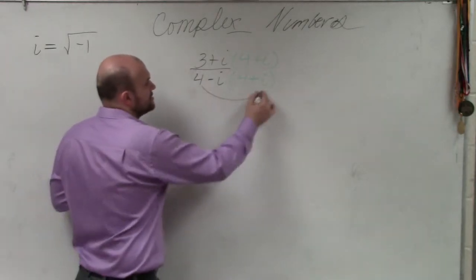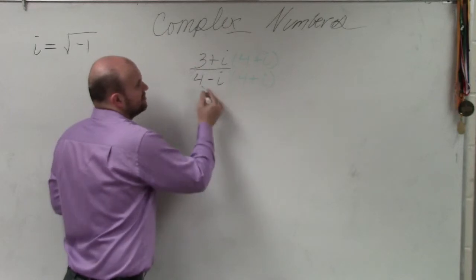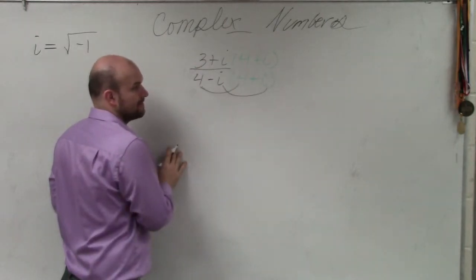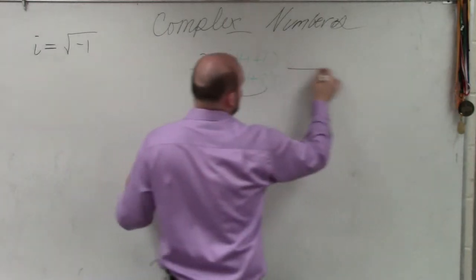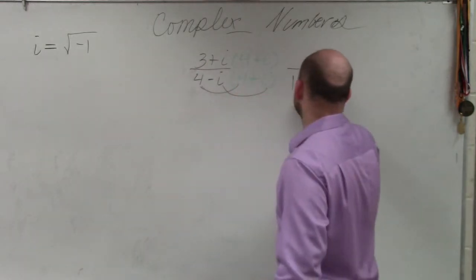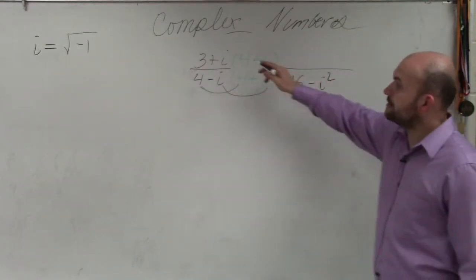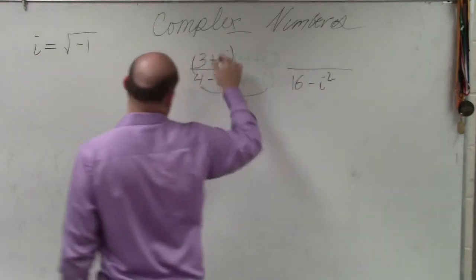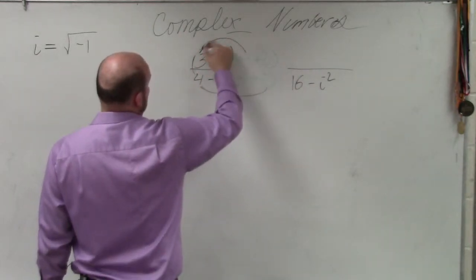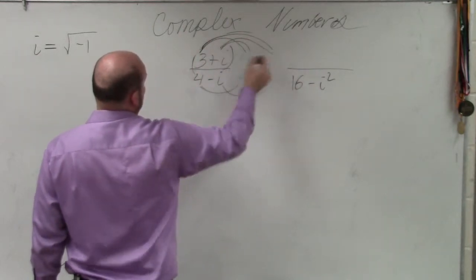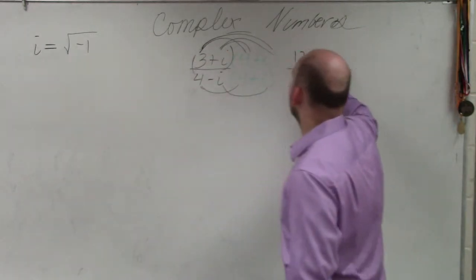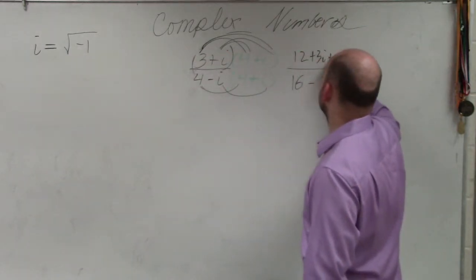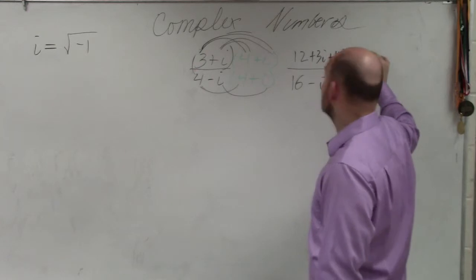So basically, all I need to do is multiply my first terms and my last terms. So therefore, my denominator over here is going to be 16 minus i squared. And then over here, though, I do have to apply FOIL. Multiply the first, outer, inner, last. So that becomes 12 plus 3i plus 4i plus i squared.